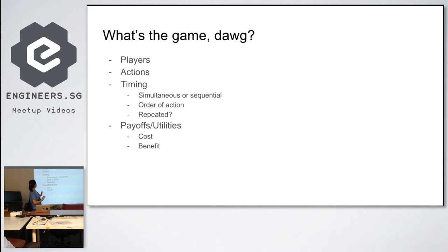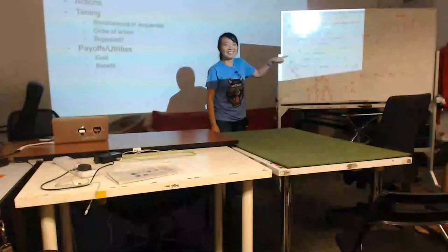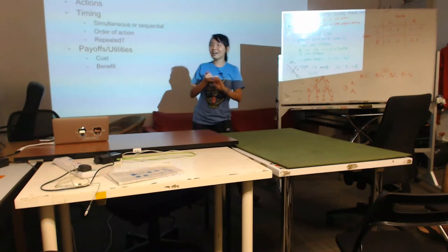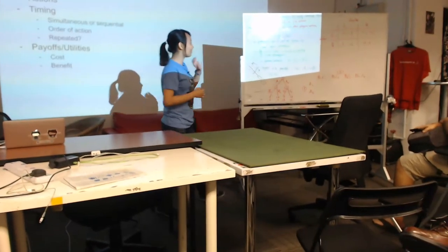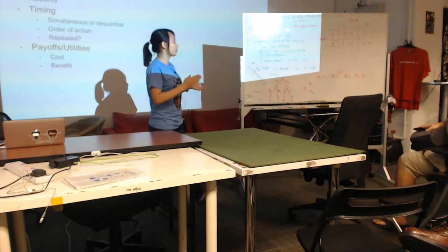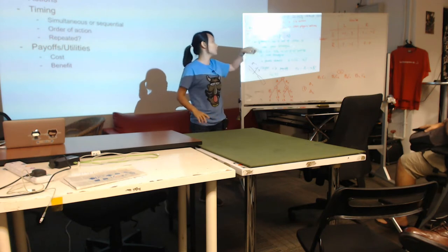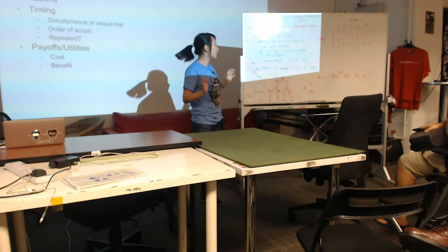So these are very generic, and I've written down the actual definitions beforehand. Players — you have to define how many players are out there. It's a set of people or entities, just from one to n or whatever.